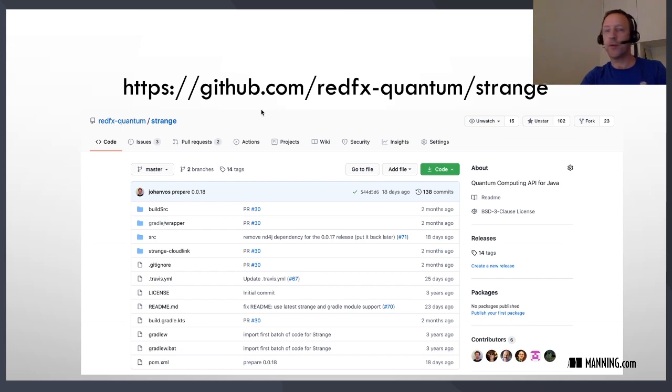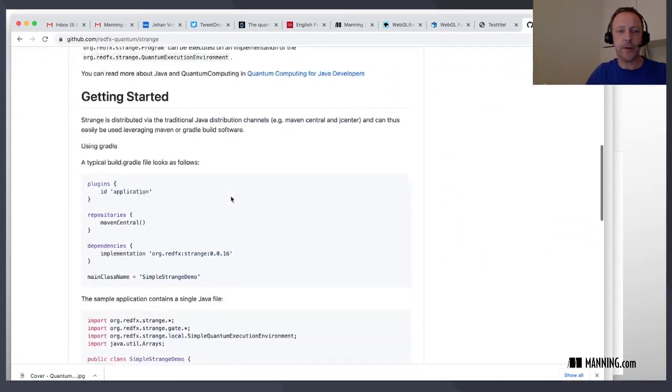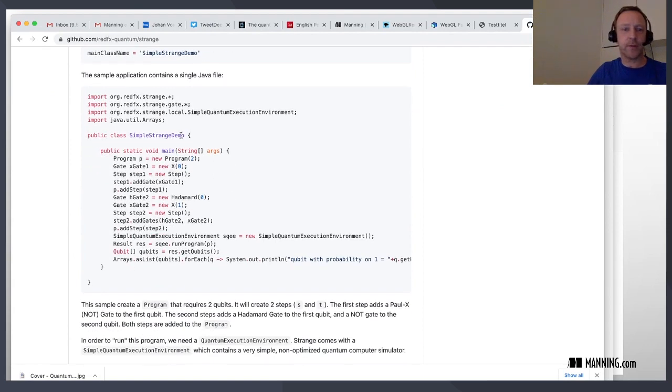Strange, the quantum simulator, is an open source project. You can go to GitHub, RedFX Quantum Strange, and you can find the source code there. It contains some information about how to build it, if you would like to build it, and how to run some samples. Maybe I can show the website. So this is Strange. It explains how you can get started with a very simple program. So this is how you can use Strange. This is a simple Java application. You can create a quantum program, add some steps and add some gates to those steps, and then execute the program and measure the results. So this is using the low level quantum APIs. I will at least show the high level quantum APIs as well. Actually, I can show them right now.